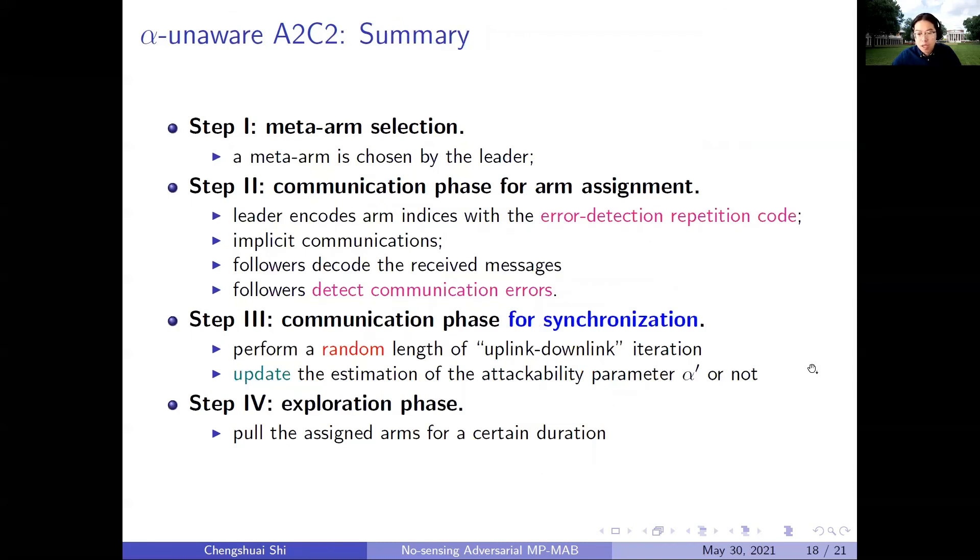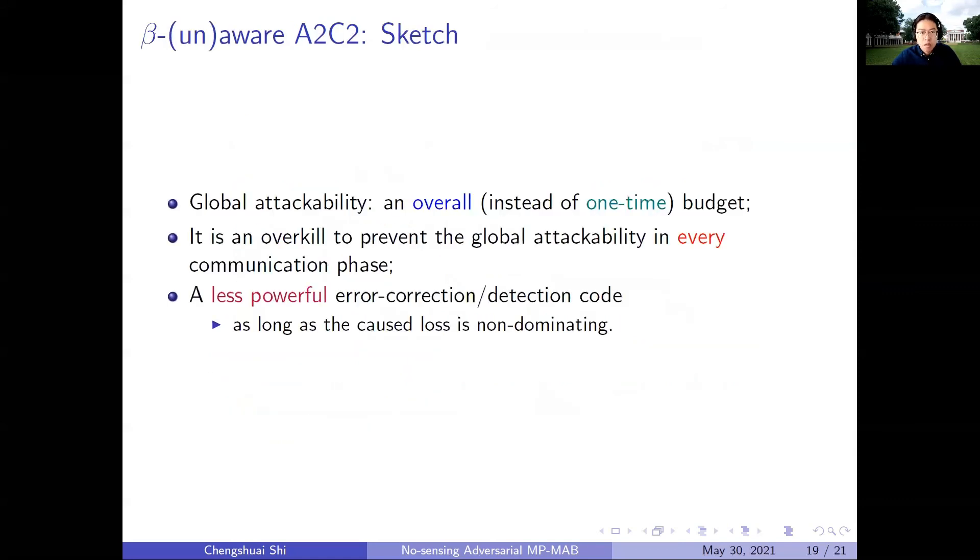The main reason behind this is that the attack at other runs are actually broadcasted, so the attack will fail. So this random iteration guarantees that the synchronization is successful with high probability. By combining these ideas together, we obtain the α-unaware A2C2 algorithm. Compared with the aforementioned α-aware A2C2, the main challenge is that we involve error detection, repetition code, and the random length communication for synchronization.